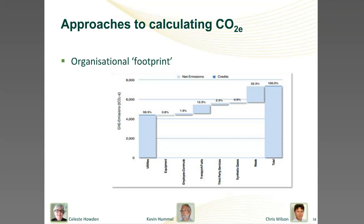In order to conduct a greenhouse gas assessment, both the organisational and operational boundaries have to be set. The GHG Protocol is a universally recognised standard for setting these boundaries, and it gives organisations consistency when accounting for and setting the scope of their emissions. Basically a GHG assessment separates emissions into three scope levels: Scope 1, Scope 2, and Scope 3. The separation of scopes ensures that no double accounting occurs.